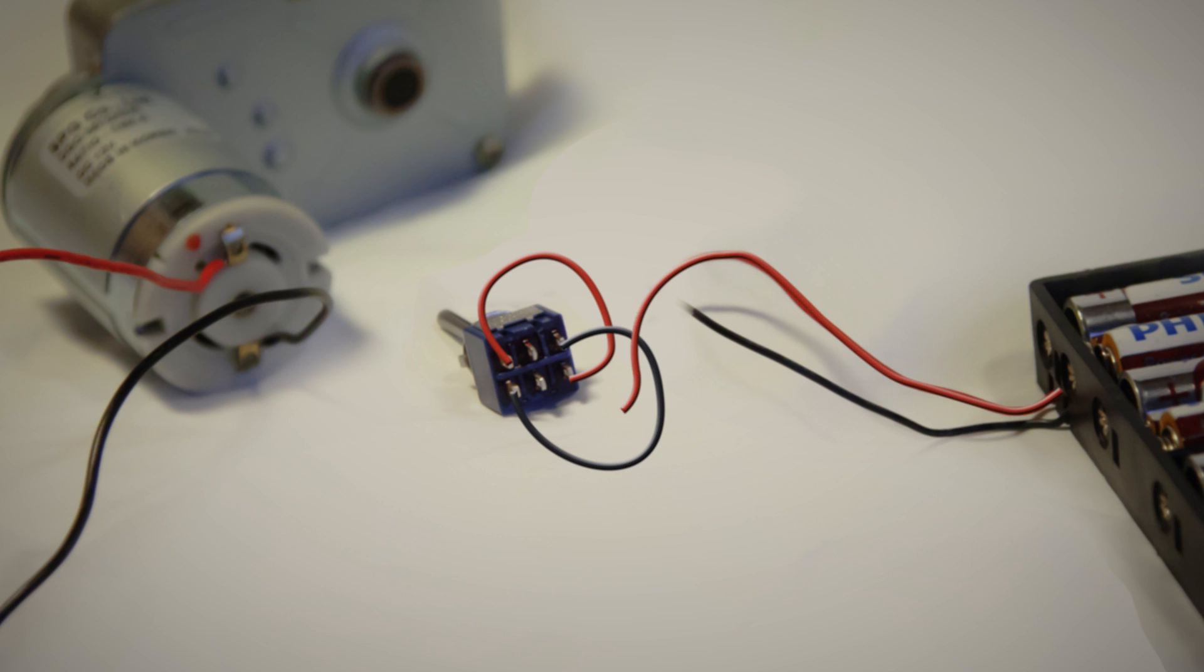Next you can take the positive wire from the power source and connect it to a pin in the middle. Do the same for the negative wire.